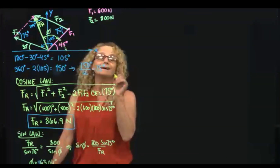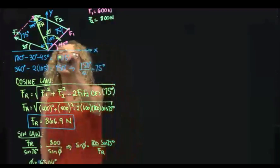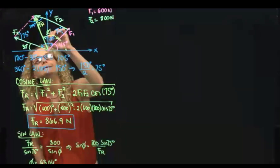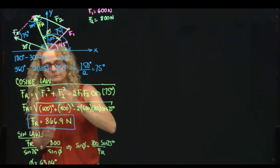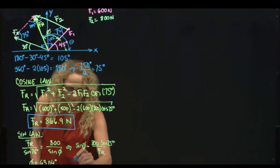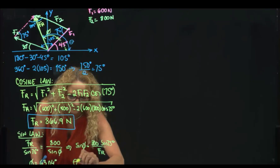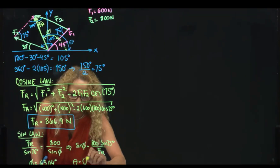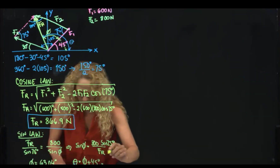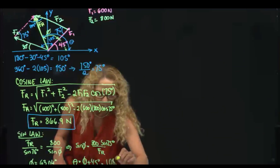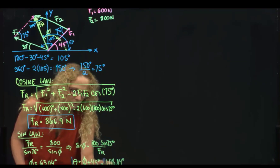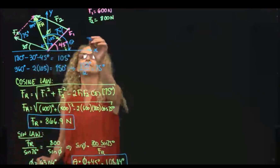But as I said, we need the angle from the x-axis, so we have to add 45. Let's call that angle theta. Therefore theta is equal to phi plus 45, which is equal to 108.04 degrees. And that's the result. This is what is called the graphical method.